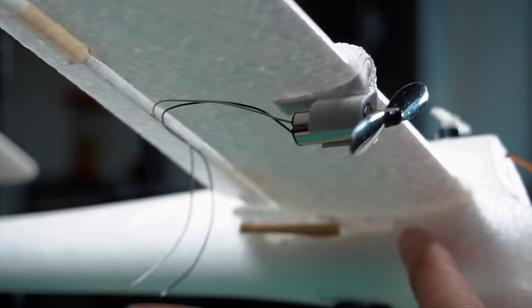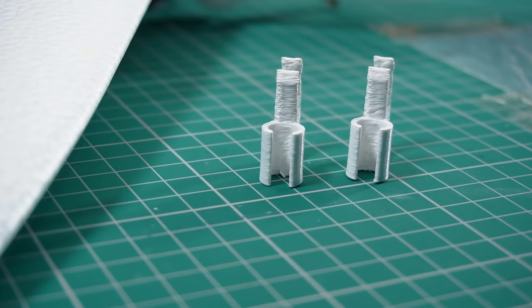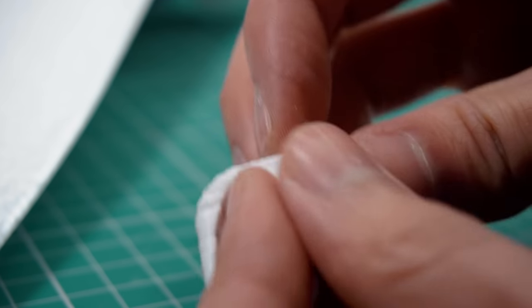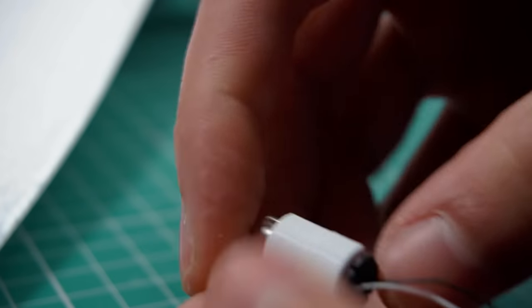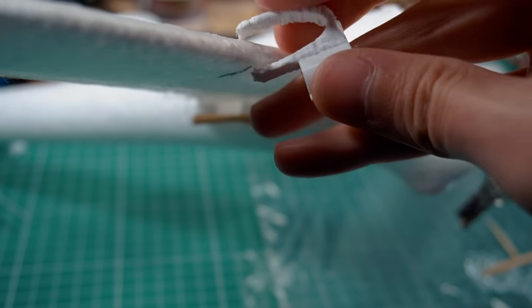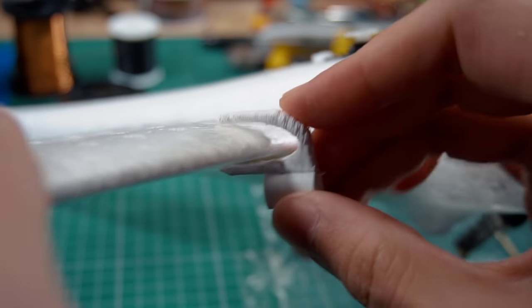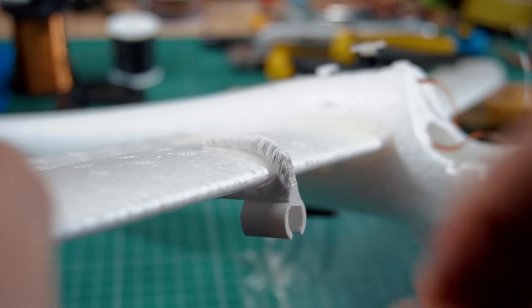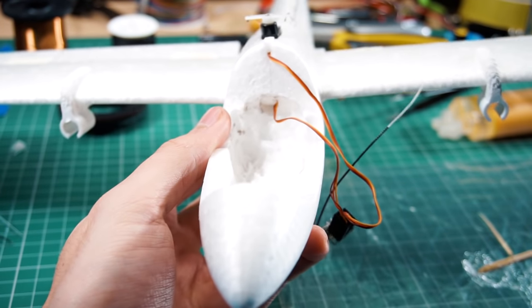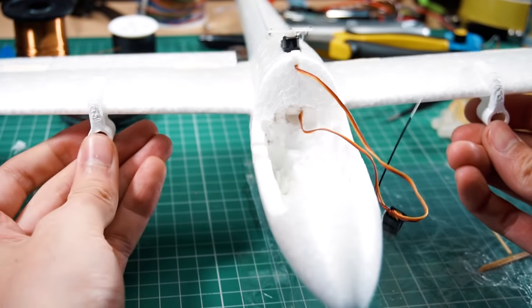And now we're ready to mount the motors and make all the connections. In this case we're using just one speed controller and we're using two motors. It is not a problem because we're using brushed motors. Each motor will take up to 1 amp at maximum speed. And the speed controller can stand up to 6 amps. So we are pretty safe there.